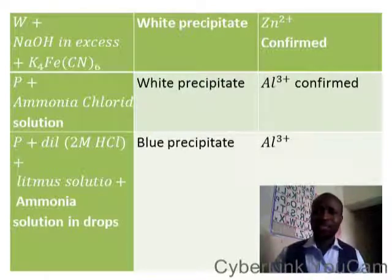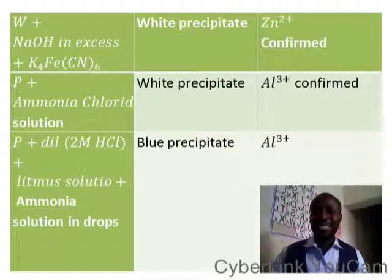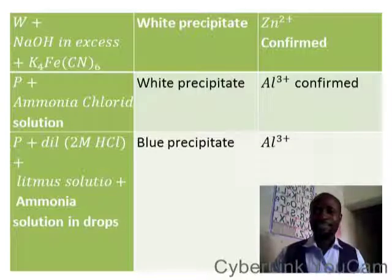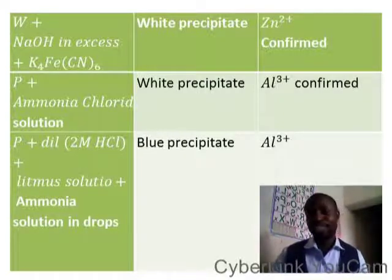W plus sodium hydroxide in drops, then in excess — you have white precipitate, which confirms the presence of zinc. You can also add potassium ferrocyanide, K₄[Fe(CN)₆] — you get a white precipitate, and use that to confirm the presence of zinc.